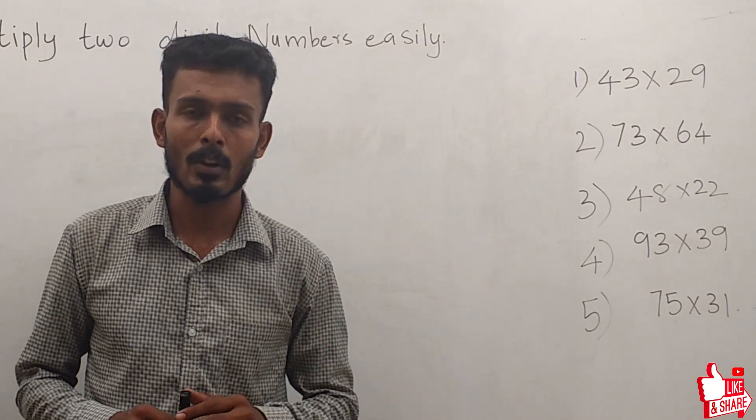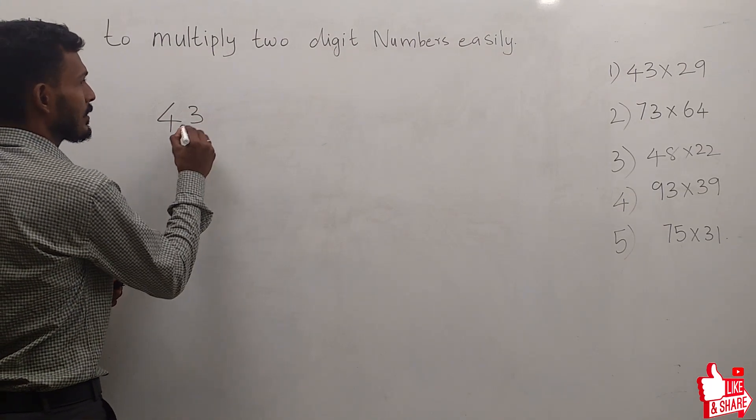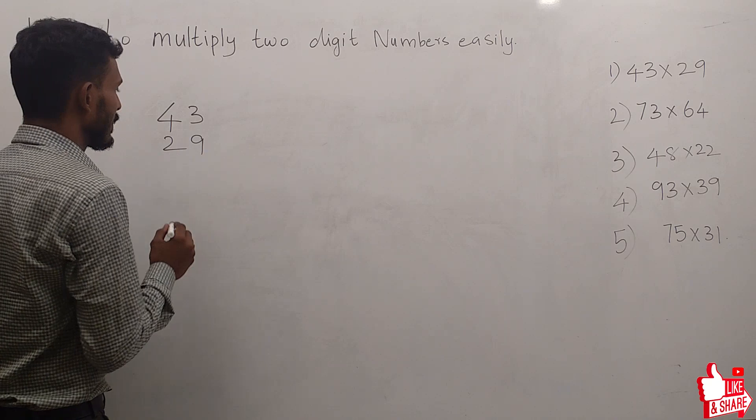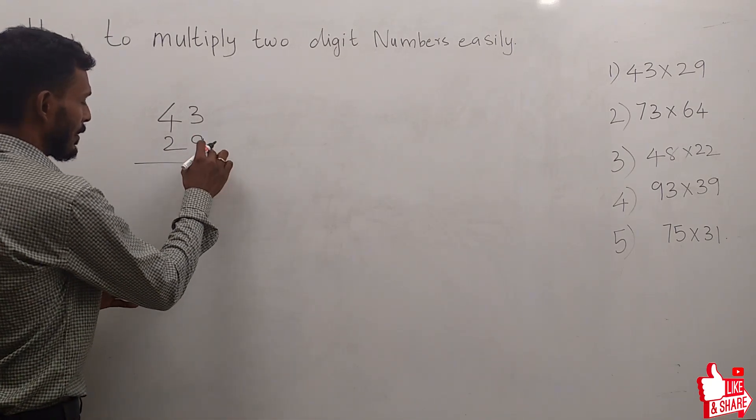This is an important trick. First of all, write down this number 43 × 29. The usual way of multiplication will be like this, from right to left on this board.